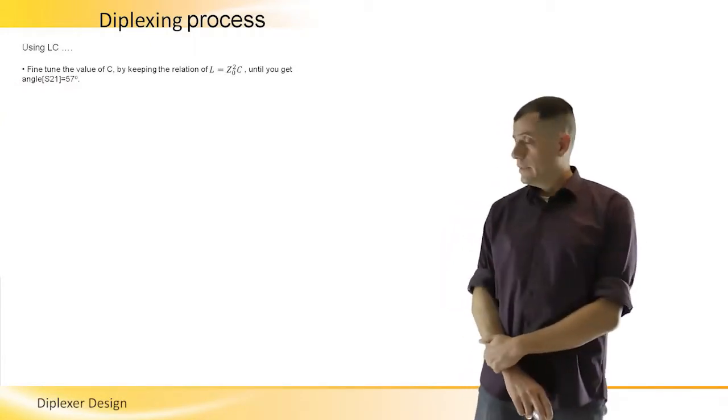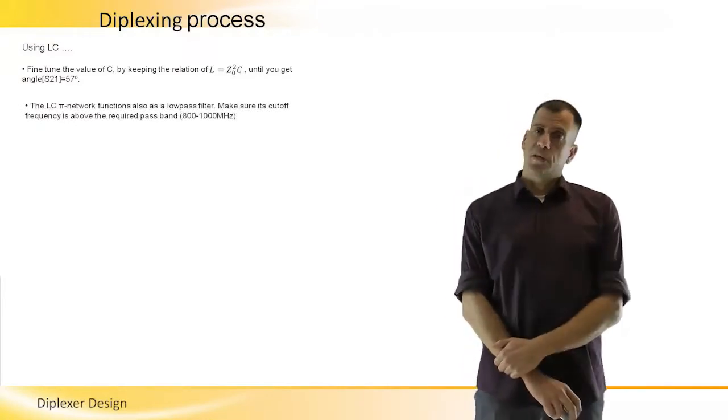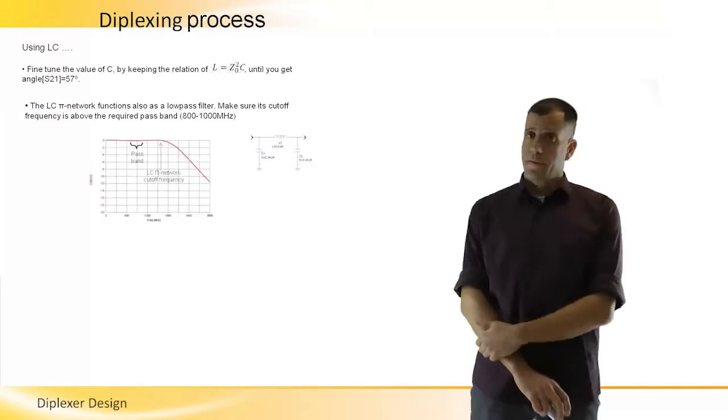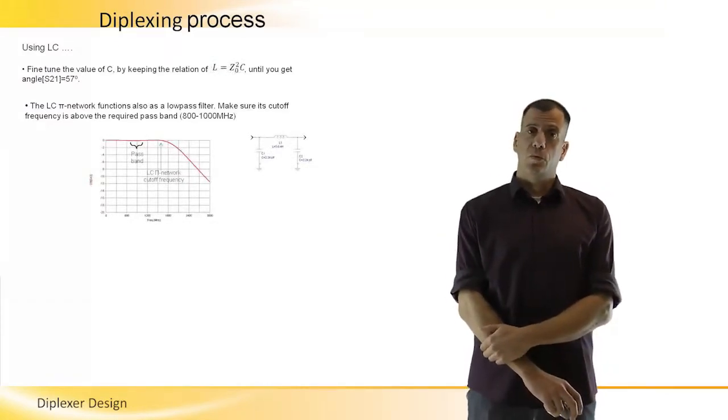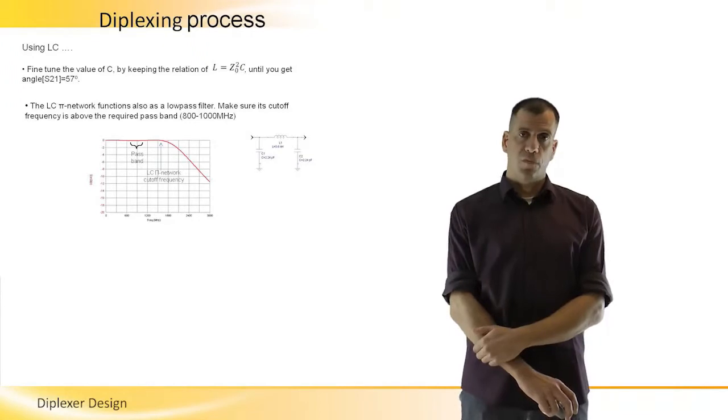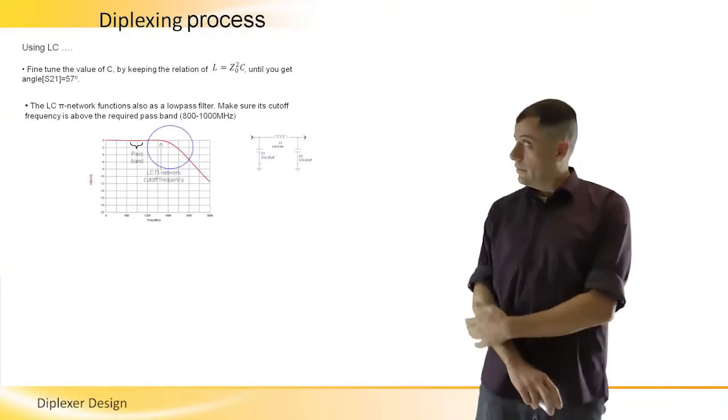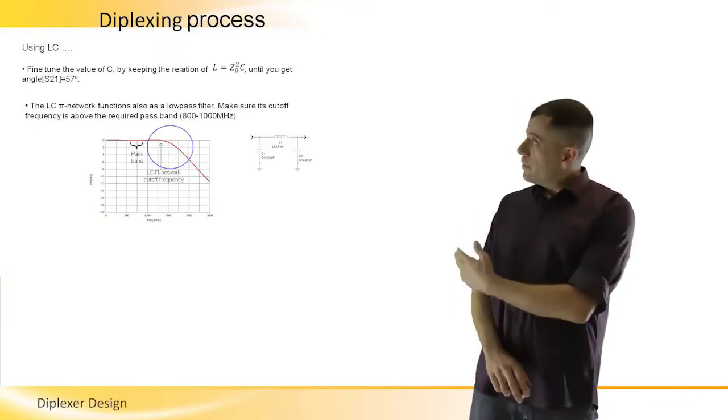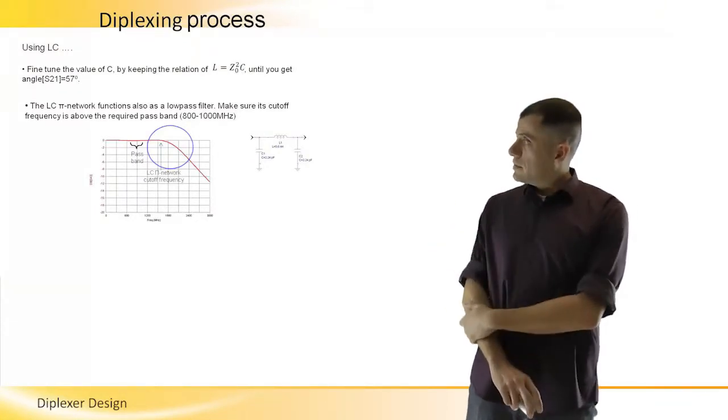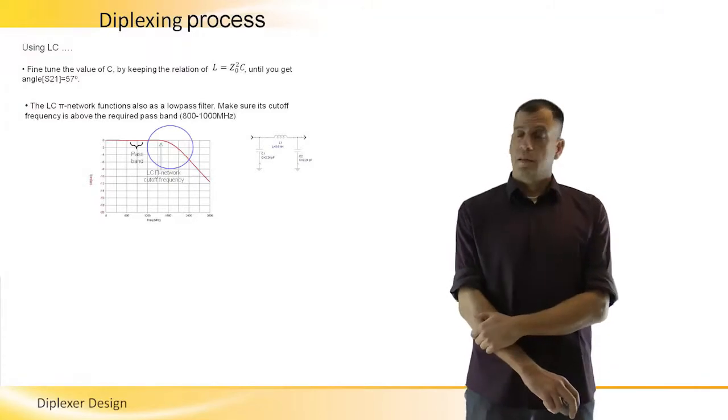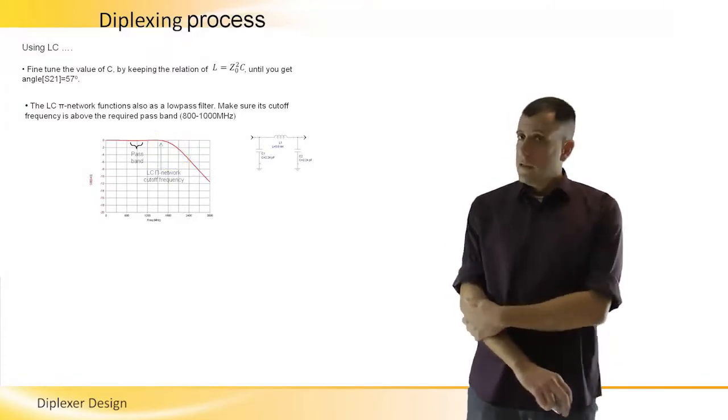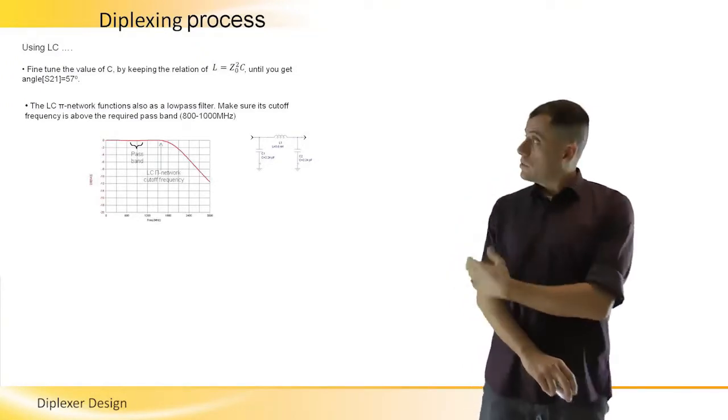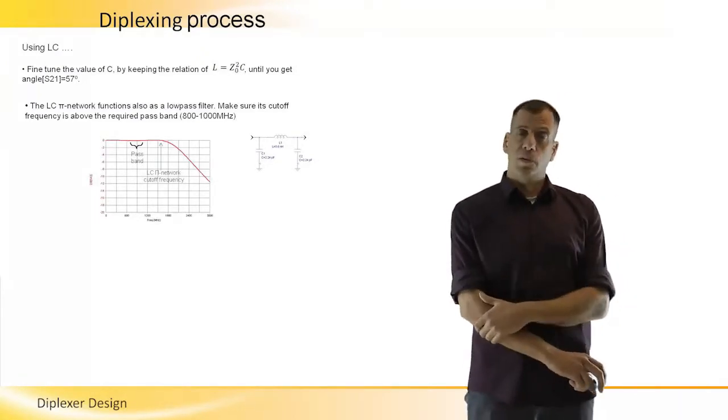Now be careful here. The LC pi structure that we presented is also a low-pass filter. We don't want its cutoff frequency to fall inside our band, don't we? See here, how it is far above the cellular band, which is our band. Now, what happens if it falls inside our band? Let's assume it falls inside our band. What will we do now?